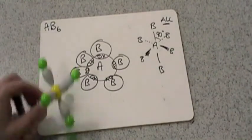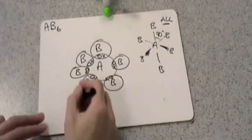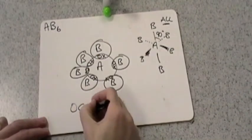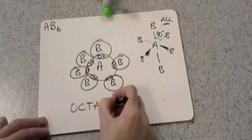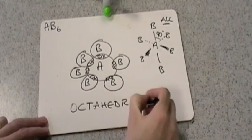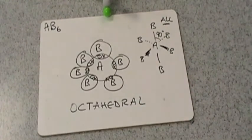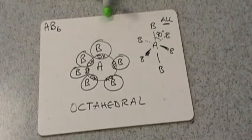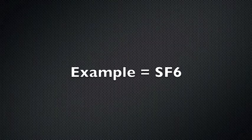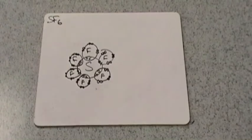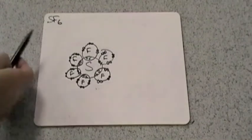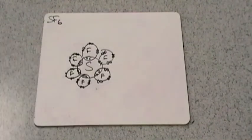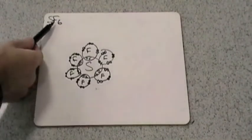The name of the shape is octahedral. So that's an octahedral shape. So here's the example I'm going to use for the six pairs of electrons in the valence shell molecule. SF6, sulfur hexafluoride. Simple covalent molecule.